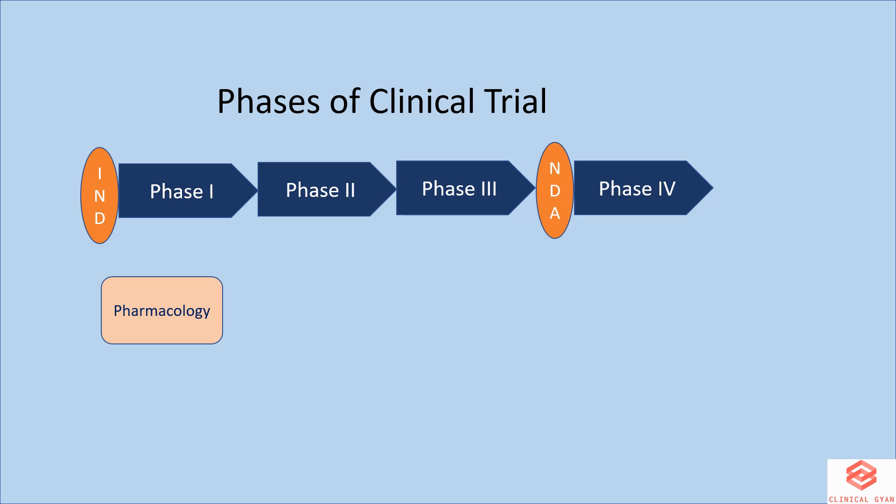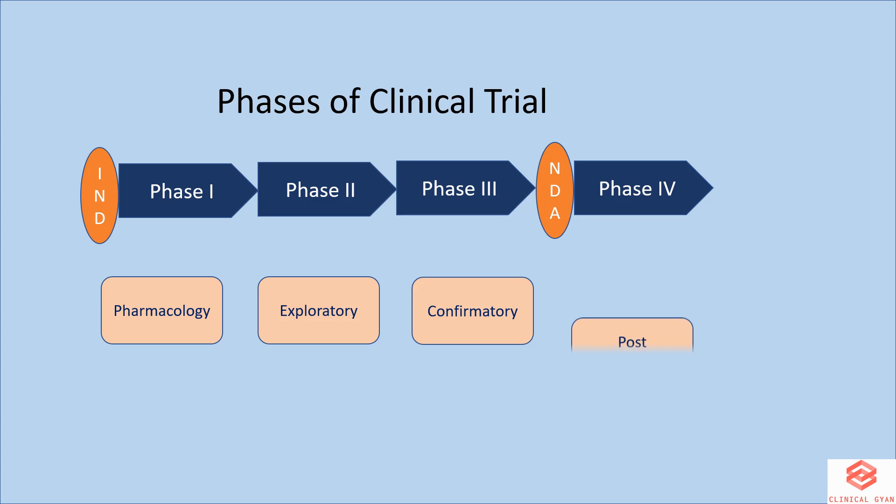Phase 1 is also known as human pharmacology, as it looks for pharmacokinetic and pharmacodynamic parameters. Phase 2 is also known as the exploratory phase, as it explores the safety and efficacy of the drug. Phase 3 is also known as the confirmatory phase, as it confirms the safety and efficacy of the drug. Phase 4 is also known as post-marketing study or surveillance, as it happens after marketing of the drug.